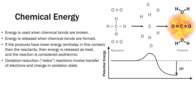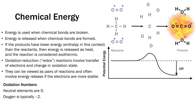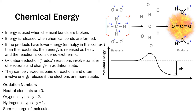Oxidation and reduction reactions — or redox — involve transfer of electrons and a change in oxidation state. They can be viewed as pairs of reactions, oxidation and reduction, and will often involve energy release if the electrons are more stable in their new configuration. Oxidation numbers are a way to keep track of the oxidation state of an atom in a molecule, analogous to charge. Neutral elements are zero; oxygen is normally minus two when combined with other elements; hydrogen is typically plus one; and the sum of oxidation numbers equals the charge of the overall molecule.